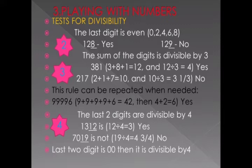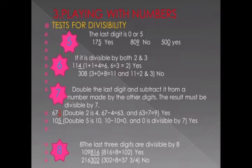For example, 1312 — the last two digits are 12. Since 12 is divisible by 4, it appears in the table of 4, so 1312 is also divisible by 4. For the second number 7019, the last two digits are 19, which is not in the table of 4, so it is not divisible by 4. Also, if the last two digits are 00, the number is divisible by 4.